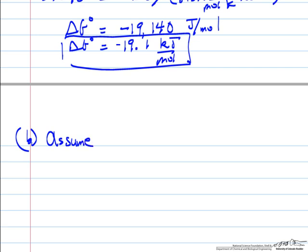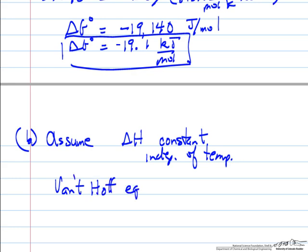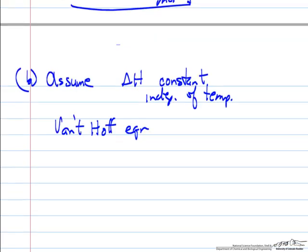we're going to assume that delta H is constant, independent of temperature. And for a small temperature change, that's probably a reasonable approximation. And then we're going to use the Van't Hoff equation, which relates equilibrium constants, so we can get the equilibrium constant at the new condition and then get delta G.